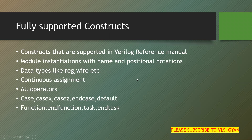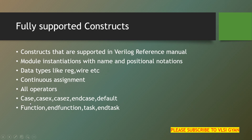The first type is fully supported constructs. These are constructs supported in the Verilog reference manual. Examples include: module instantiations with name and positional notations; data types like reg, wire, and net; continuous assignments; all operators such as arithmetic, conditional, and logical operators — all synthesizable and able to be inferred into a circuit. Case, casex, casez, endcase, default, function, endfunction are also fully supported.